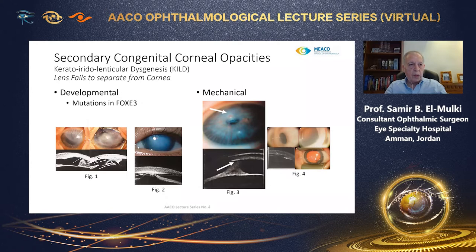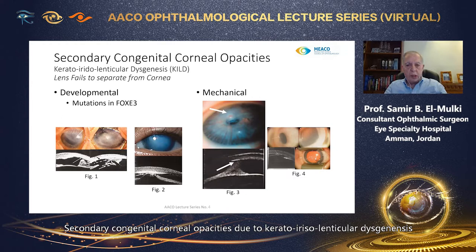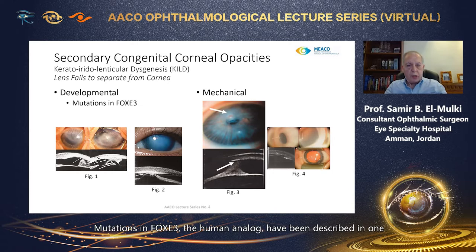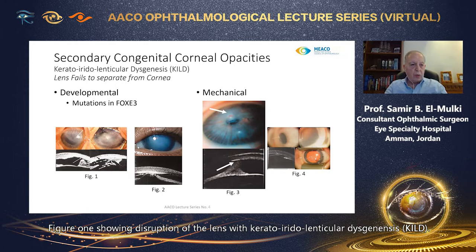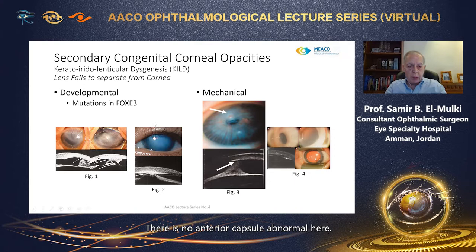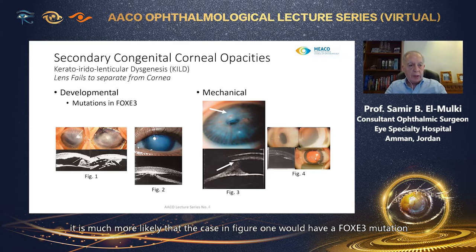Secondary congenital corneal opacities due to keratoiridolenticular dysgenesis where the lens fails to separate from the cornea may be developmental or mechanical. Mutations in FOX-E3, the human analogue, have been described in individuals with a diagnosis of Peter's anomaly — though this is too imprecise. Figure 1 shows disruption of the lens with keratoiridolenticular dysgenesis; there is no anterior capsule echo discernible. Based on UBM and clinical appearances, the case in figure 1 is much more likely to have a FOX-E3 mutation than the case in figure 2, yet both cases may be termed as having Peter's anomaly.